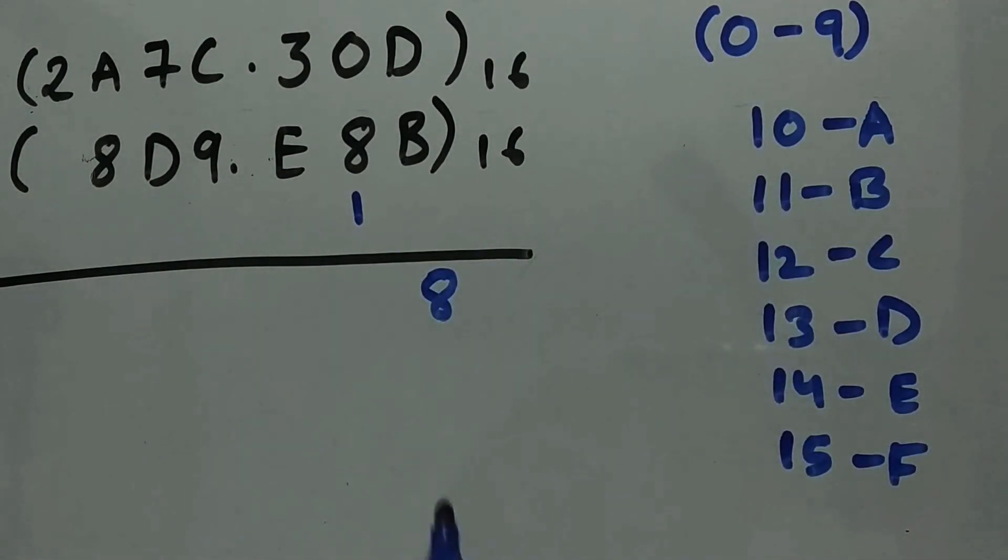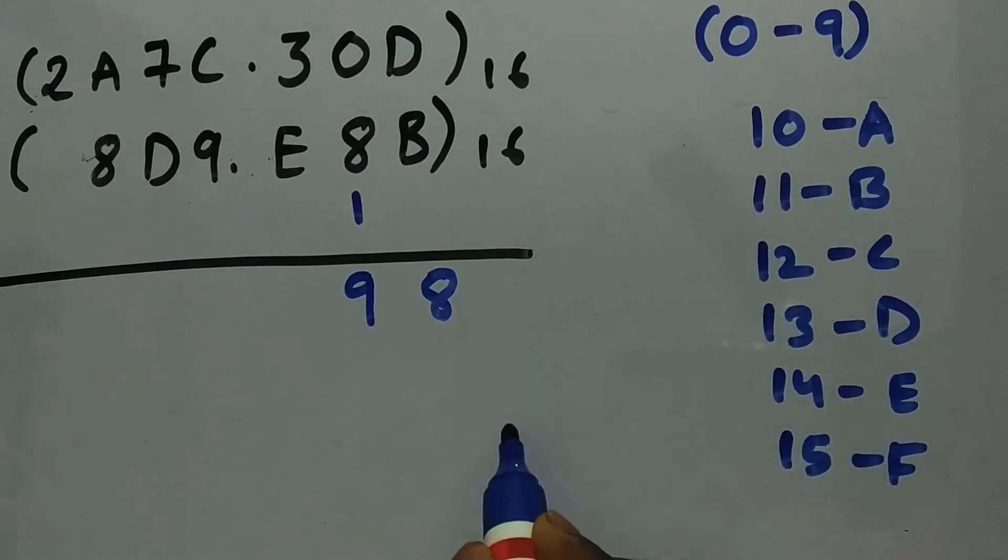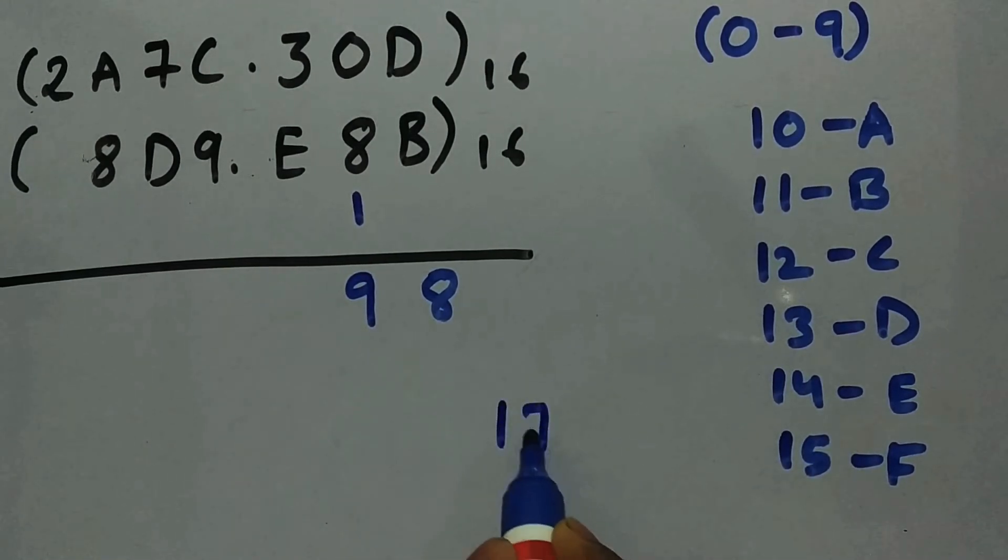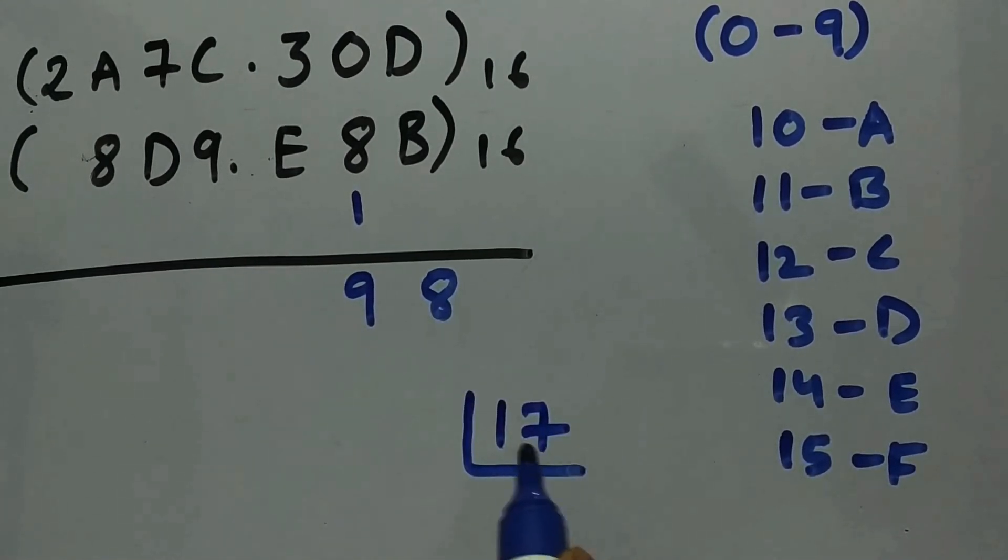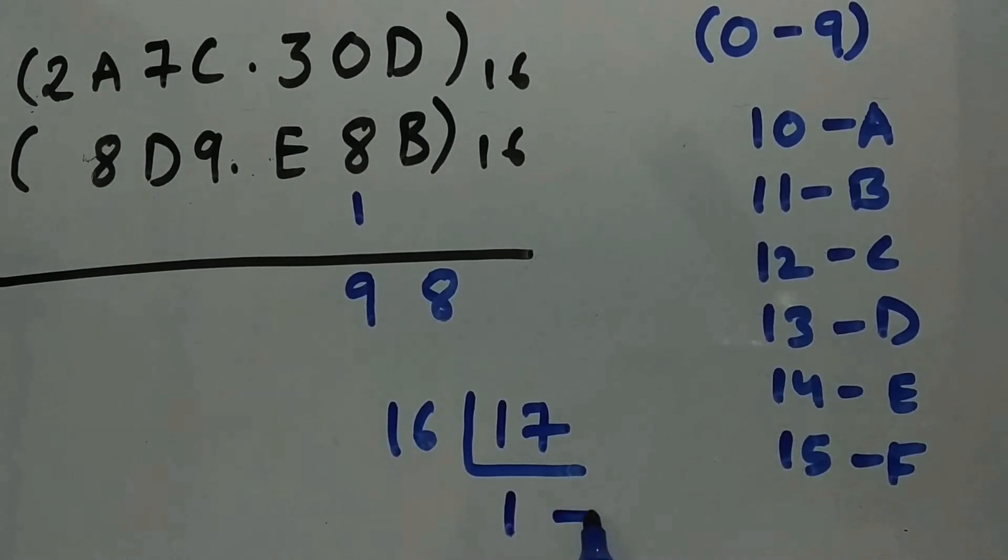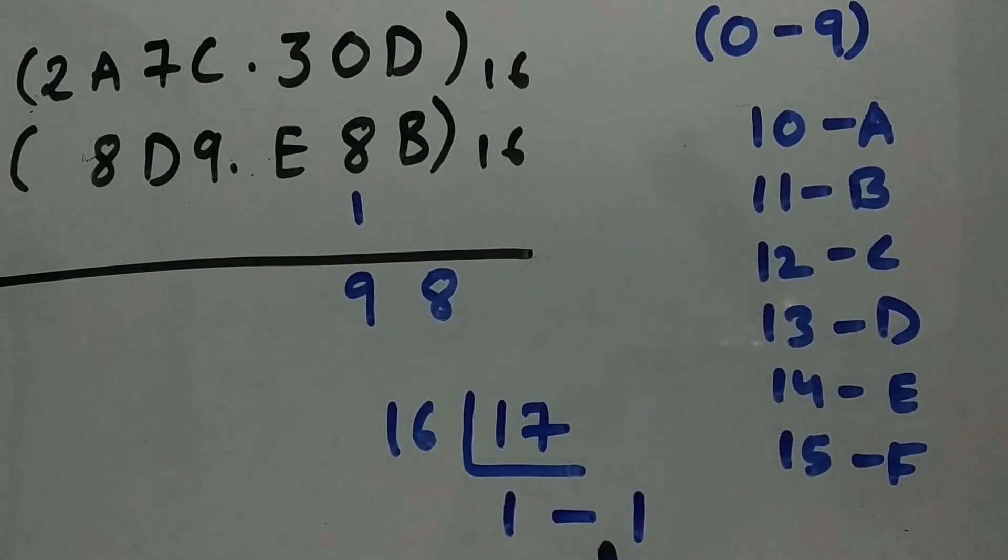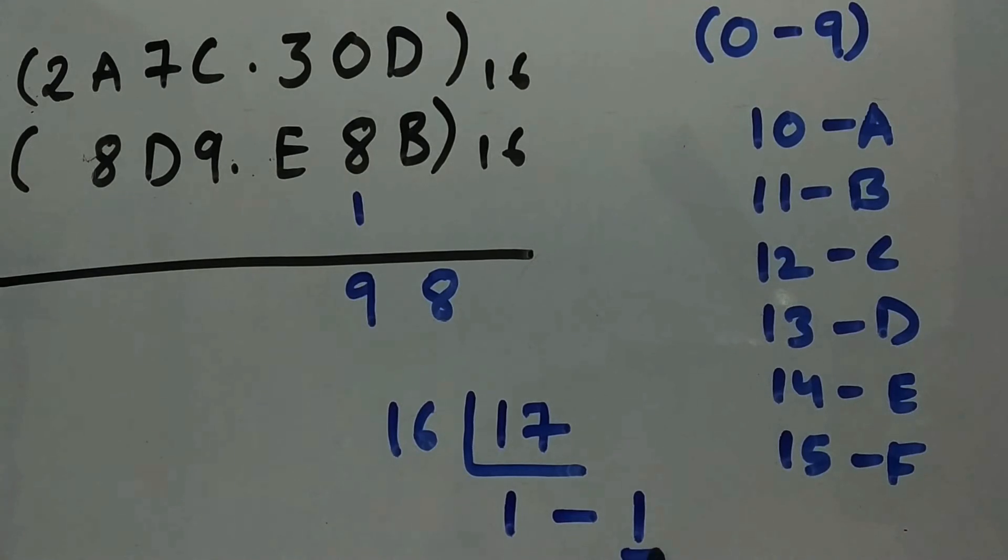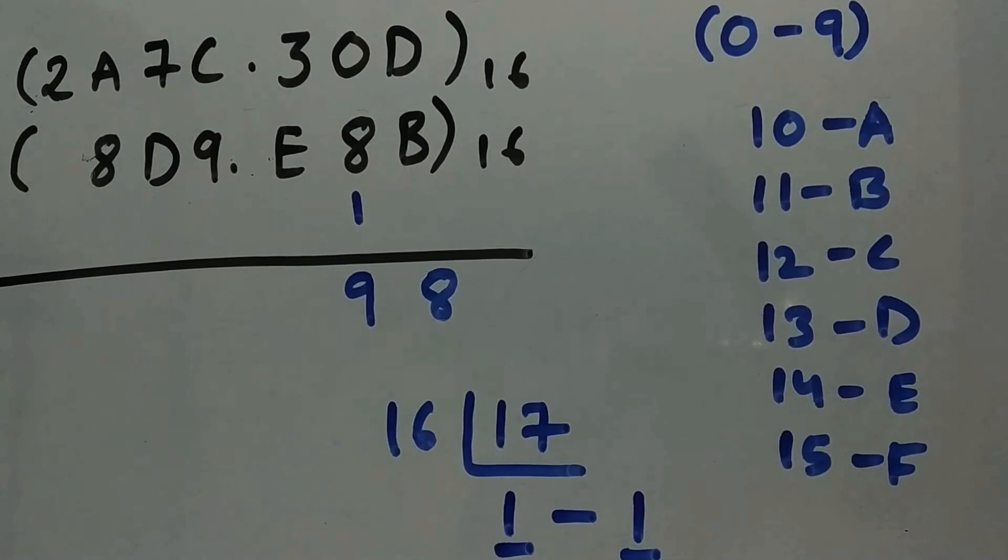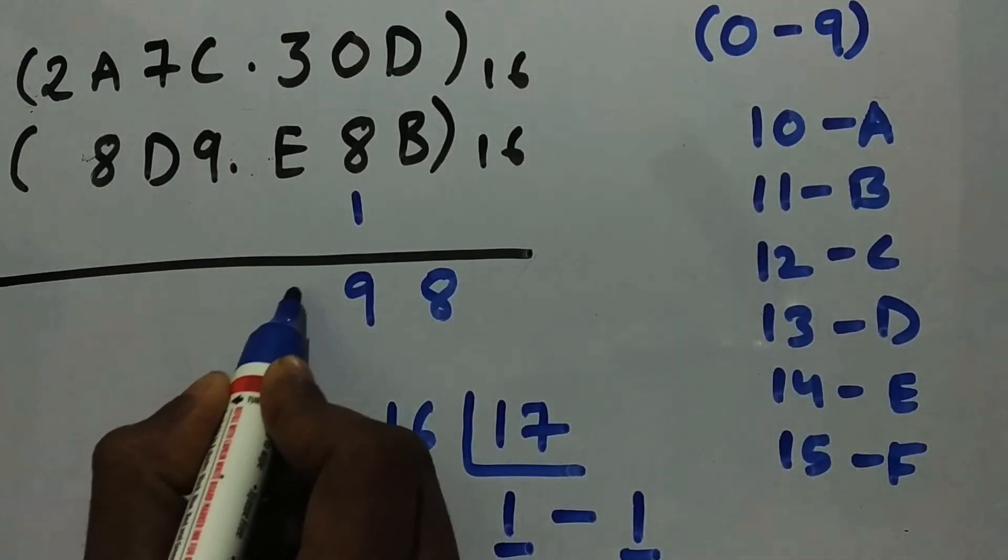problem over here, so let's write it as 9. Now 3 plus E: E is 14, so 14 plus 3 is 17. So 17 needs to be converted from decimal to hexadecimal. Whatever we add is in decimal form, so we need to convert into hexadecimal: 16 goes 1 time and 1 remainder. So this is 1, this is sum and this is carry, so write 1 over here and carry is 1.